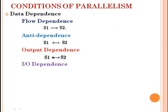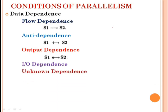IO dependence occurs not because the same variables are involved, but because the same file is referred to by both IO statements. When the read and write statements refer to the same file, that dependency is called input-output dependency.